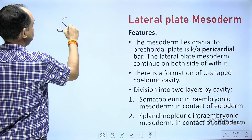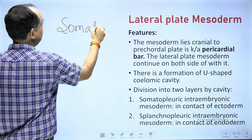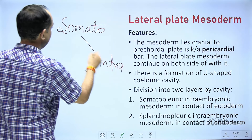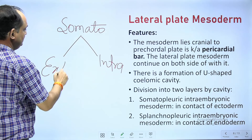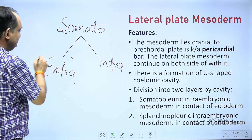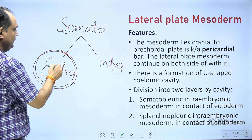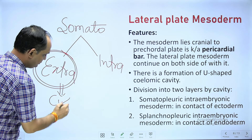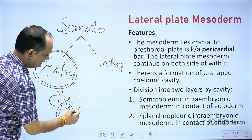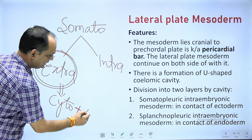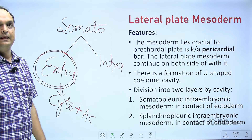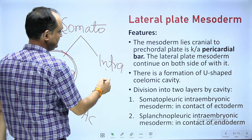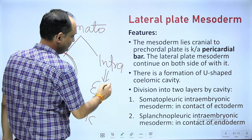You will therefore have somatopleuric intra embryonic mesoderm and somatopleuric extra embryonic mesoderm. The somatopleuric extra embryonic mesoderm lies inside the cytotrophoblastic cell layer and covers outside the amniotic cavity. The somatopleuric intra embryonic mesoderm is a mesoderm that is related with the ectoderm layer.